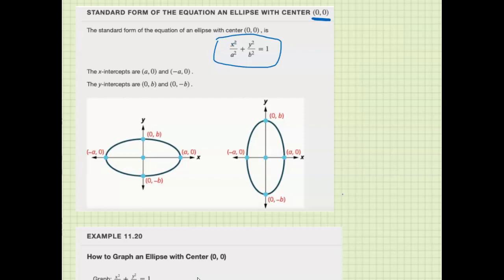So a is basically how far you move left and right from the center. If you have a center here at 0, 0, then you move a units to the right and a units to the left to figure out the ends of the ellipse in the horizontal direction. And b is how much you move up and down - b up and b down from the center. That gives you the extremes of the ellipse up and down, so it gives you the x and y intercepts.